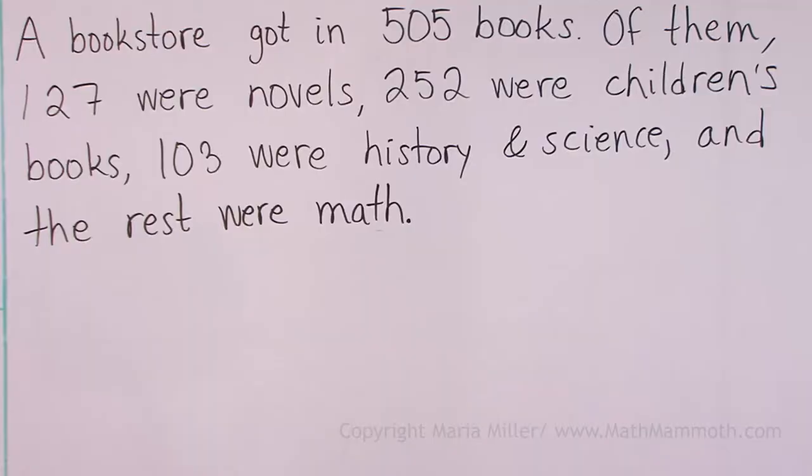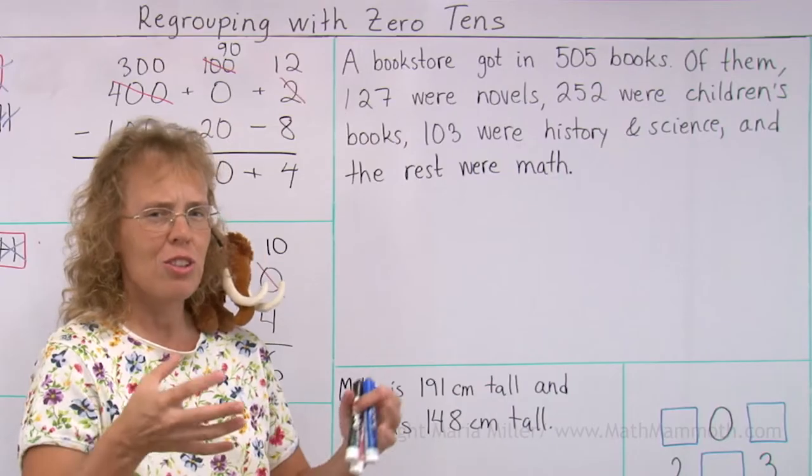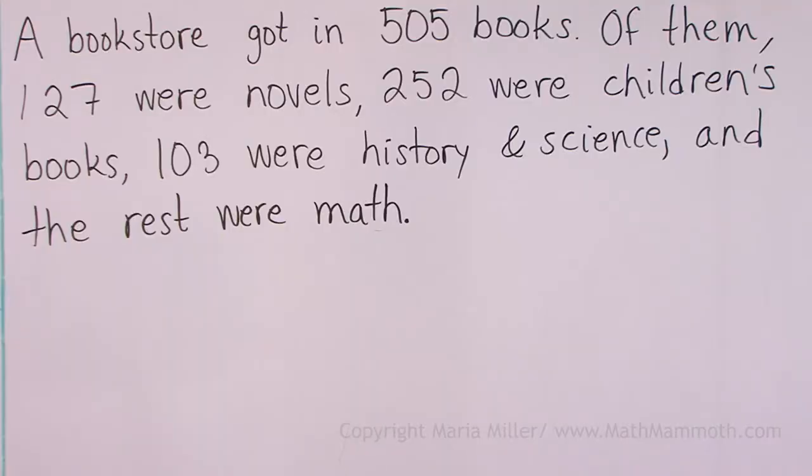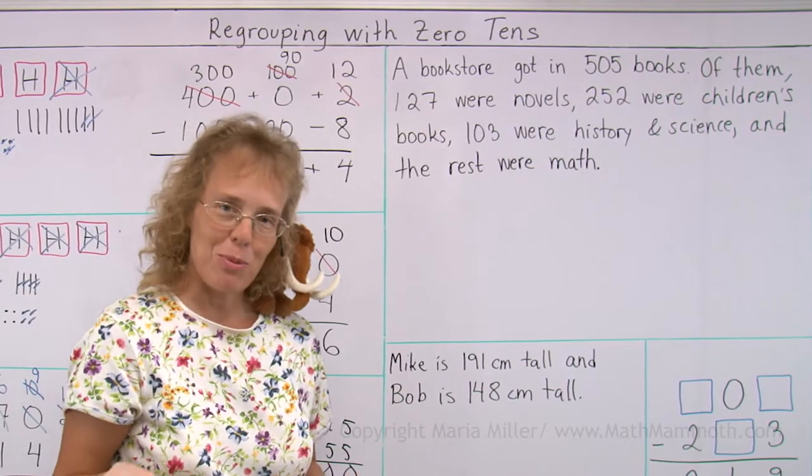A bookstore got in 505 books. They got the shipment of books that they're going to sell in the bookstore. Of them, 127 were novels or stories, and then 252 were children's books, and then 103 were history and science books, and the rest were math books.